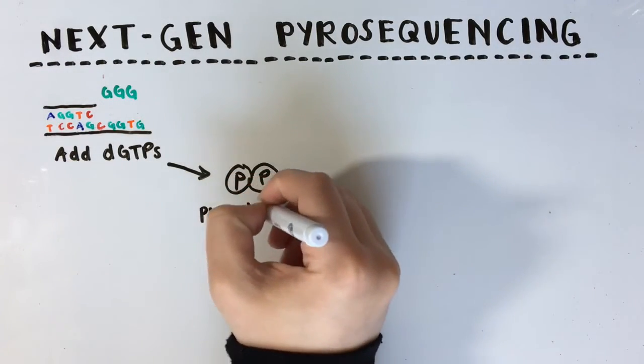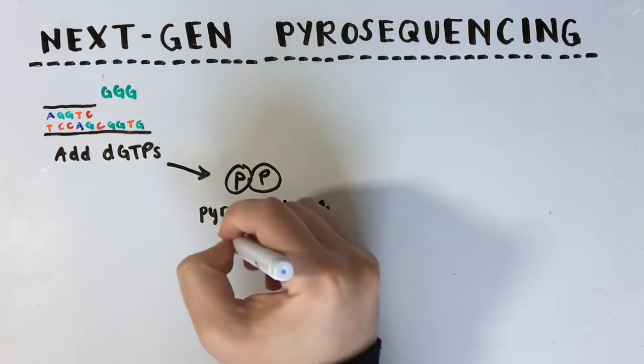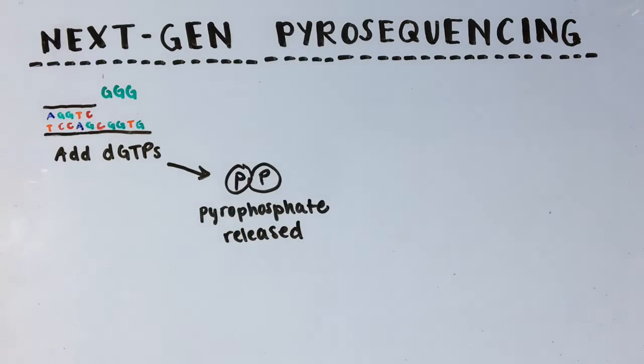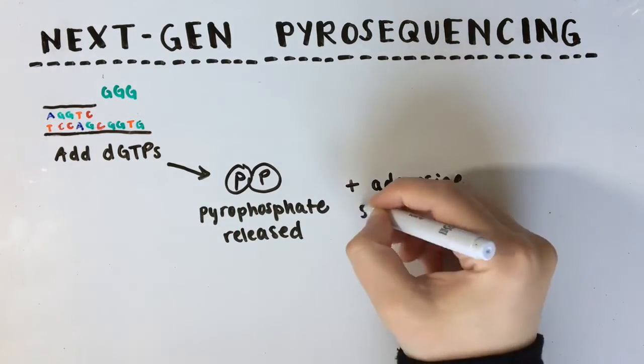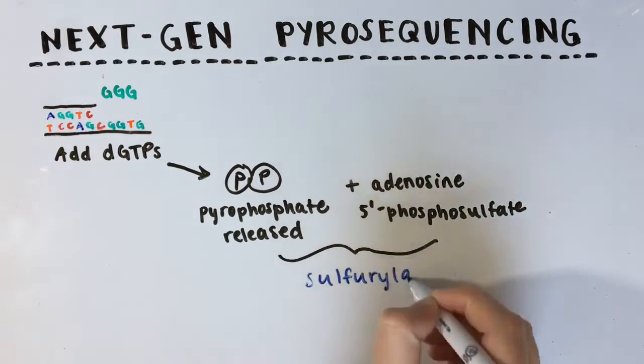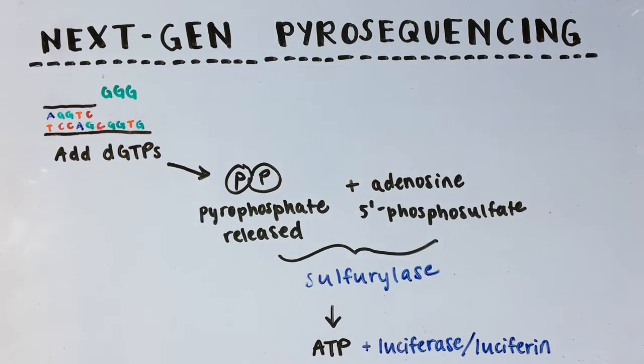D-NTPs are added one at a time, and when the correct nucleotide is added to the template strand, pyrophosphate is released. This pyrophosphate is converted to ATP using the enzyme sulfurylase. The luciferase and luciferin in the medium can react with the ATP, and a little flash of light is produced.